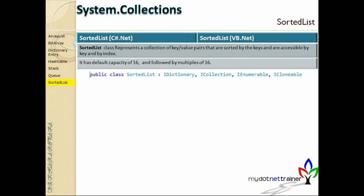The default capacity of a SortedList is 16. Once you add the first item, it reserves space for 16 elements. When you add a 17th element, it allocates another 16 slots. This automatic resizing is handled internally by these built-in collection classes, which was one of the key advantages we discussed when introducing built-in collections.